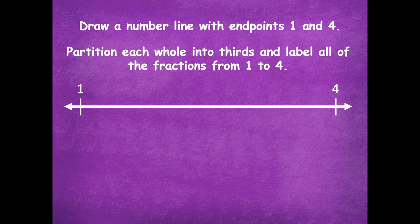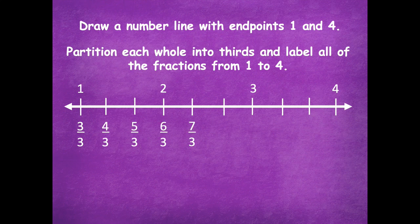All right friends, pause if you need more time. Here we go — I'm going to label my missing wholes: one, two, three, and four. Now I'm going to split each whole into thirds: between one and two, between two and three, and between three and four. Then I can label my fractions: one is the same as three thirds, then four thirds, five thirds, six thirds, seven thirds, eight thirds, nine thirds, ten thirds, eleven thirds, and twelve thirds. Remember, when you get to those whole-number fractions, it's a great place to stop and check. For two: six divided by three equals two. For three: nine divided by three equals three. For four: twelve divided by three equals four. That's how you can check yourself — a good review of our previous lesson.